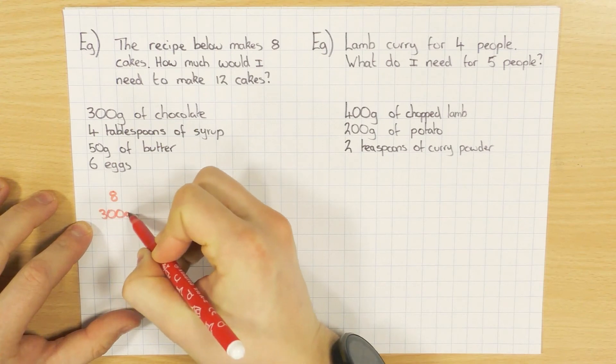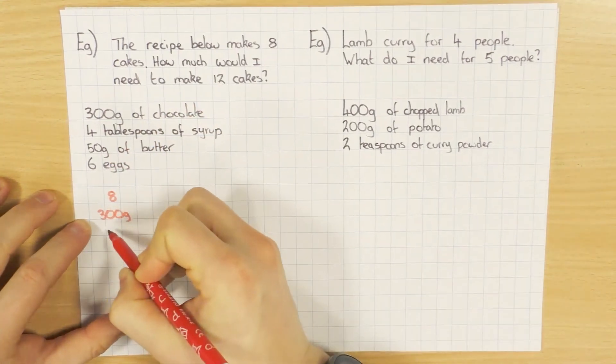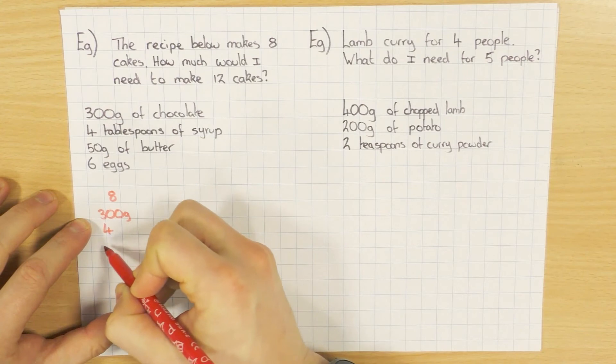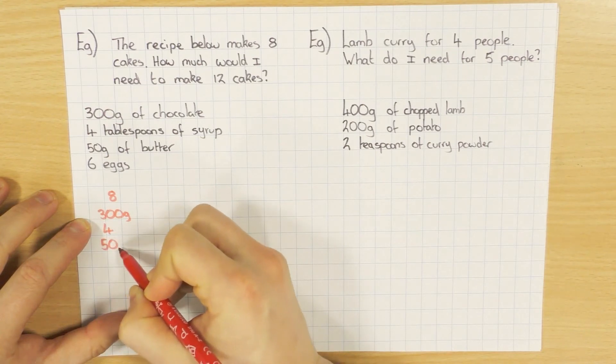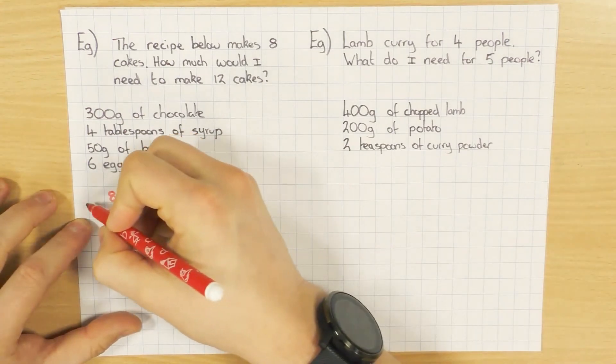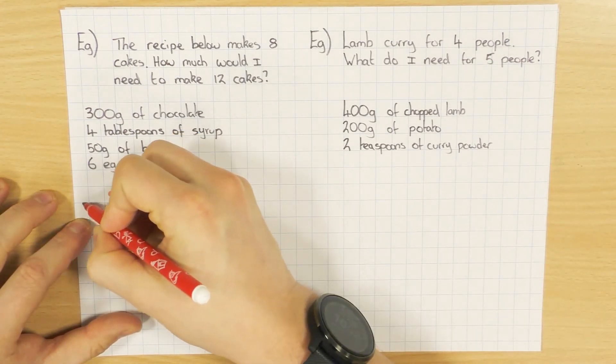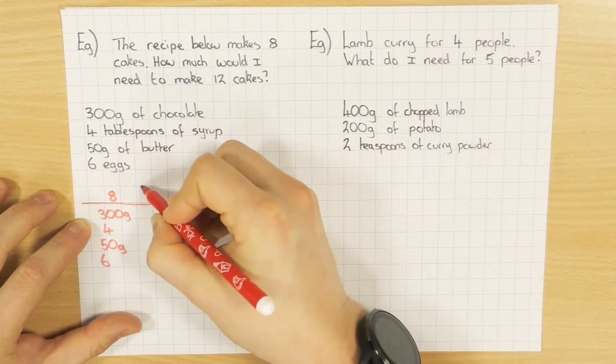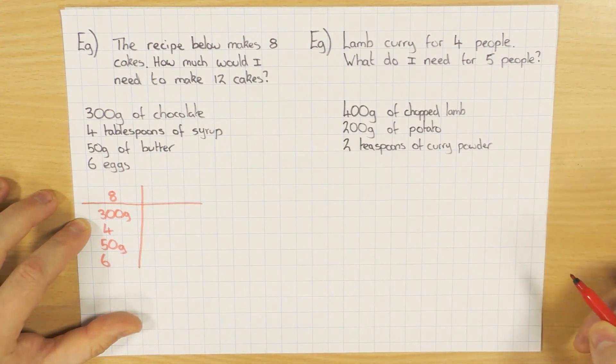So 300 grams. I'm just going to copy the amounts as opposed to the whole thing. Four tablespoons, 50 grams, and six eggs. So if there's eight, let's draw a mini table, that might make it a bit easier to see what's going on. So eight cakes, that's what I need.